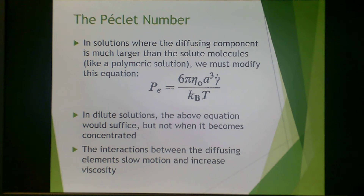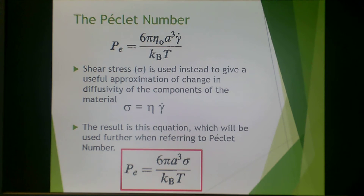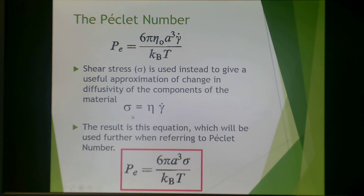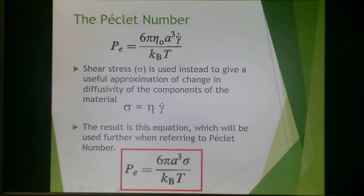In solutions where the diffusing component is much larger than the solvent molecules, such as a polymeric solution, we must modify this equation. The above equation suffices for dilute solution, but not when it becomes concentrated, as interactions between diffusing species slow motion and increase viscosity. In that case, shear stress is used instead to give a useful approximation of changes in diffusivity, using the Newtonian relationship between shear stress and shear rate, resulting in the modified Péclet equation shown in the red box.